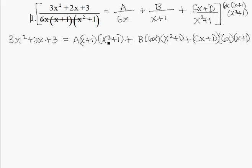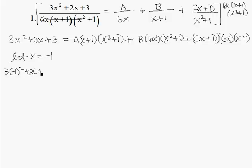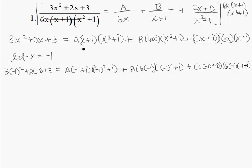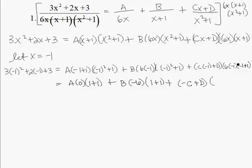Now we look for values that make factors equal zero. If we plug in x equals negative 1, that makes the x plus 1 factor zero, wiping out the A term and the Cx plus D term. So let x equal negative 1. The left side becomes 3 times negative 1 squared plus 2 times negative 1 plus 3. On the right, the A term becomes A times 0, and we get B times negative 6, and then negative C plus D times negative 6 times zero.